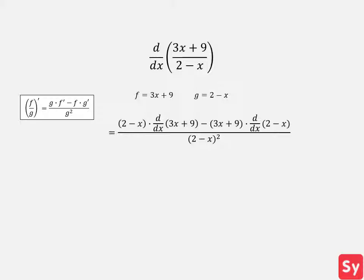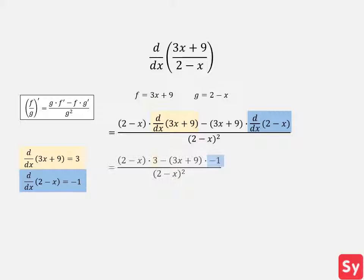We compute the derivatives of 3x plus 9 and 2 minus x using the power rule and constant rule, and plug in those values. Now we can simplify this and get 15 over x minus 2 squared, our answer.